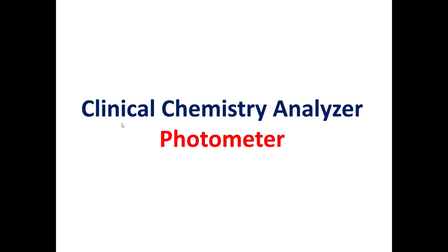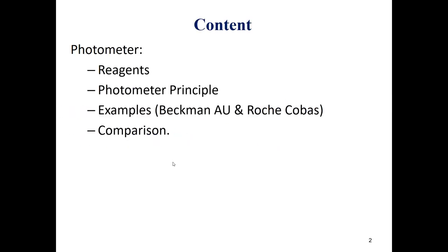Photometer will be the topic of the second part of the Clinical Chemistry Analyzer. In this part, we will talk about the reagents, why we need reagents, and we will give some examples. Then we will talk about the principle for photometer, with two examples: the photometer used by Beckman in the AU analyzers, and the photometer used by Roche in all Cobas analyzers. Then we will make a comparison between these two photometers.